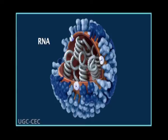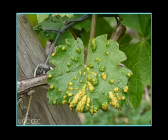Riboviruses are the viruses that possess RNA as genetic material. The RNA is either single-stranded or double-stranded, linear or circular. Plant viruses are generally riboviruses.